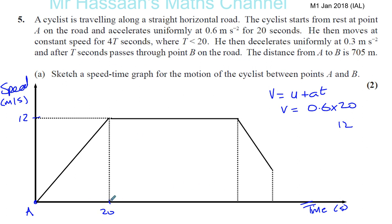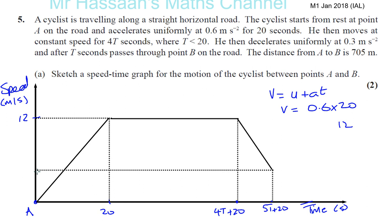So we know this first phase is 20 seconds. He then moves at constant speed, so that section ends at 20 plus 4T seconds. Then he decelerates for another T seconds, so the total time to B is 5T plus 20 seconds. We don't know what the speed is at point B, but we know the total distance under the curve is 705 meters.